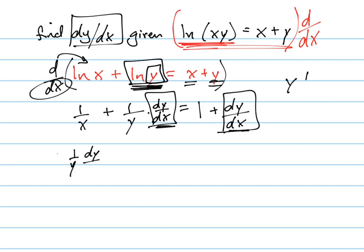1 over y dy/dx. I kept that there. I'm moving this over, so I subtract it, right? So that's dy/dx equals. I'm leaving this here, and I'm moving this to the other side, so I subtract it.